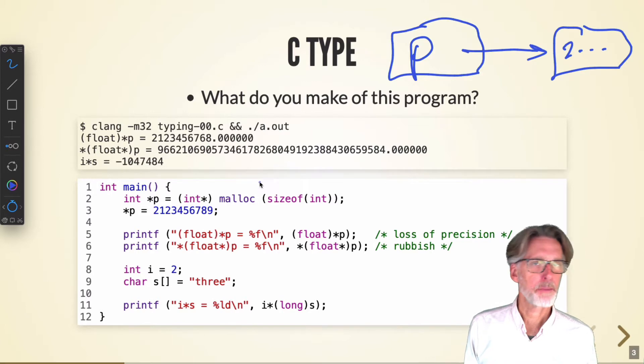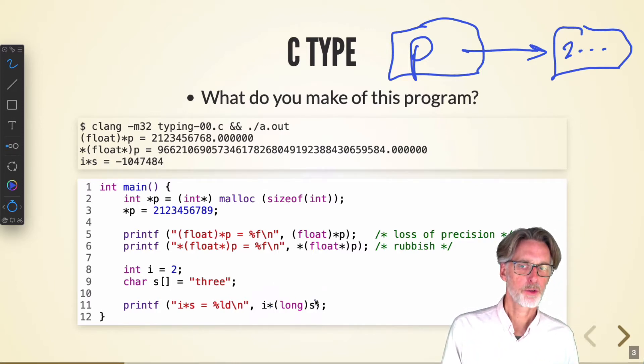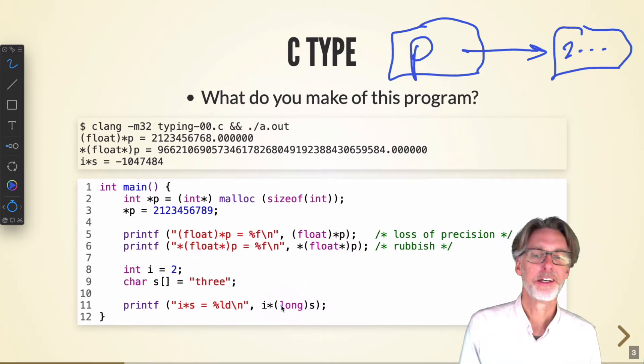And just to make matters worse, let's continue. So let's take an integer and a string. This is a C string. And let's multiply them together. So multiplying a string by an integer, of course, doesn't make any sense. But what I'll do is simply cast the string to a long. You might wonder what happens. Do I get the number three? No, I don't. I get some number that's actually the address of the string in memory.